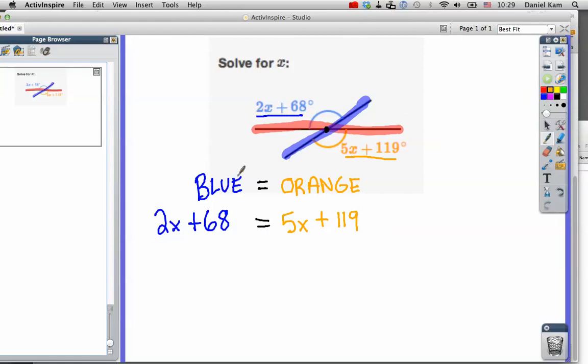What we need to do now is get the x by itself. So let's subtract 68 from both sides. The 2x just comes down. The 68s cancel because 68 minus 68 is 0. It's going to equal 5x. And 119 minus 68: 9 minus 8 is 1, we have to carry the 1 from here, 11 minus 6 is 5, so 51.